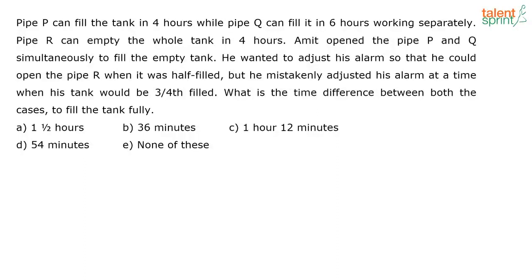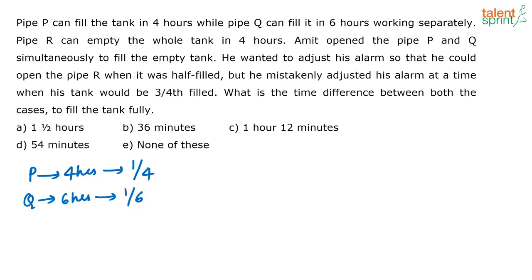Pipe P can fill a tank in 4 hours while pipe Q can fill it in 6 hours working separately. Pipe R can empty the whole tank in 4 hours. Amit opened pipes P and Q simultaneously to fill the tank. In 1 hour, pipe P will fill 1/4 of the tank, pipe Q will fill 1/6 of the tank, and pipe R will empty 1/4 of the tank.